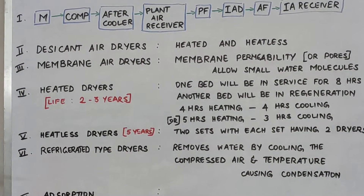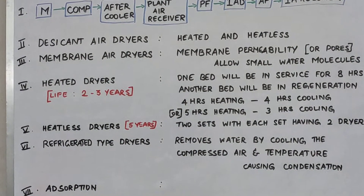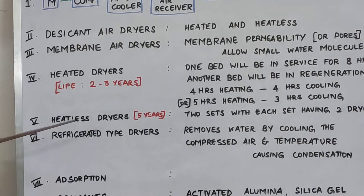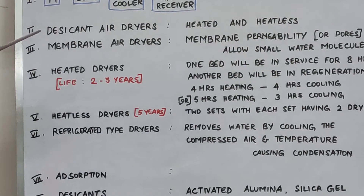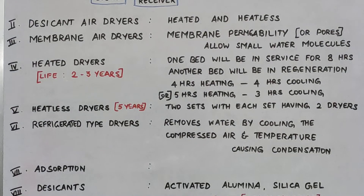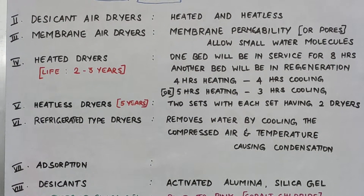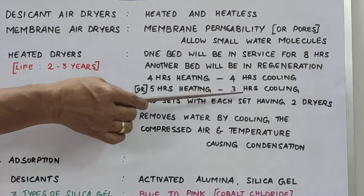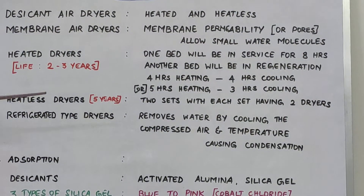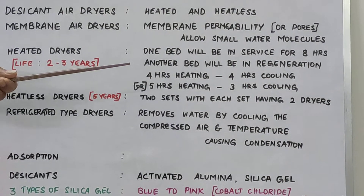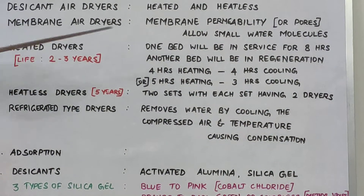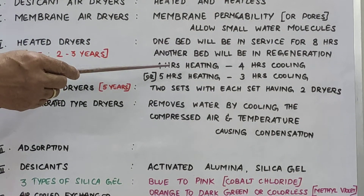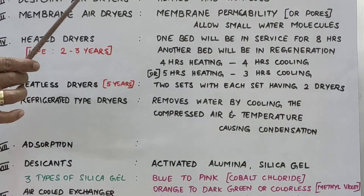In the instrument air dryer there are two types: conventional and non-conventional. The conventional type uses desiccants, which includes the heated dryer and the heatless dryer. The heatless dryer is the non-conventional type. In the heated dryer, typically eight hours is the service period and eight hours for regeneration — four hours for heating the regeneration bed and four hours for cooling, or alternatively five hours heating and three hours cooling. In the heatless dryer, one bed is online for five minutes while the other is in standby, and at the end of five minutes both beds equalize, then the first bed is depressurized by purging.